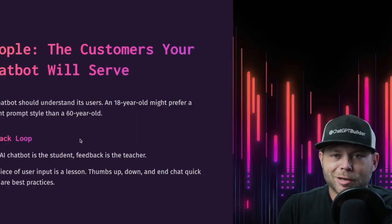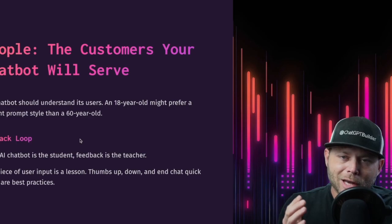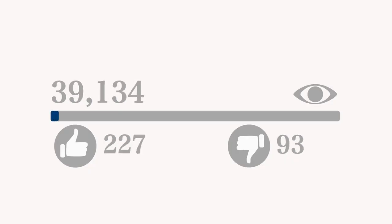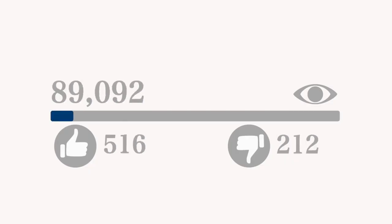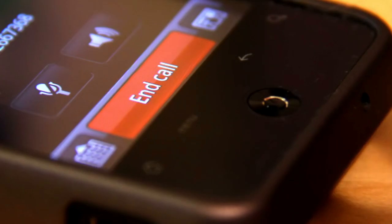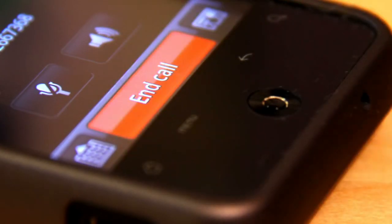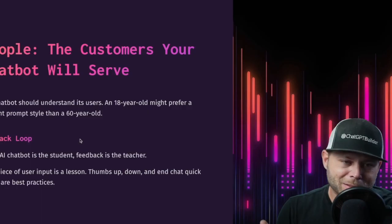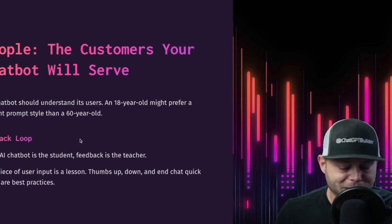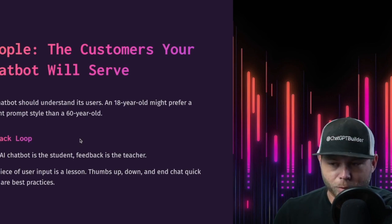Imagine this scenario: you've got a thumbs up, a thumbs down, and an in-chat button. This is a very common setup. The feedback loop is very important.